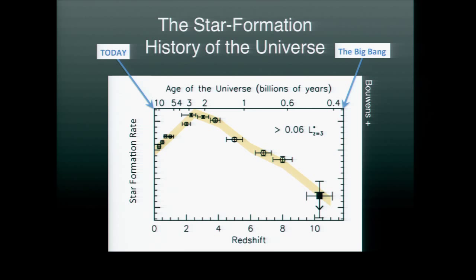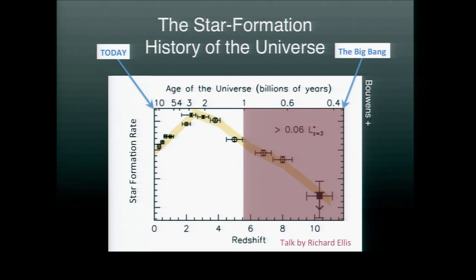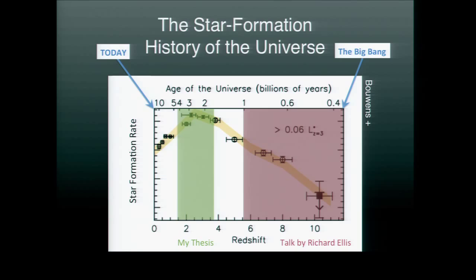If we were to make a plot of the activity rate of the universe, it would look something like this, where we're plotting the rate at which the universe forms stars as a function of its age, starting at very early times right after the Big Bang, up to today. This most active time is when the universe was forming stars most prolifically, and a large fraction of the stars we observe in the present universe were actually formed during this period.